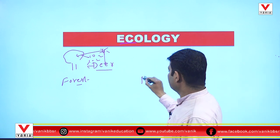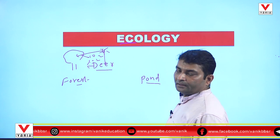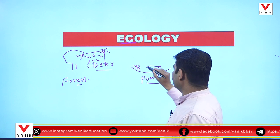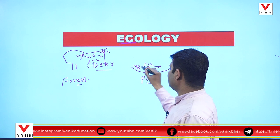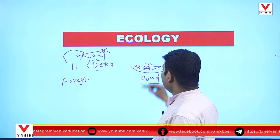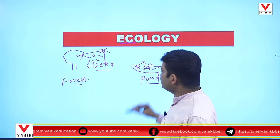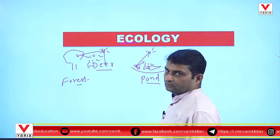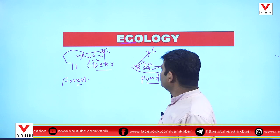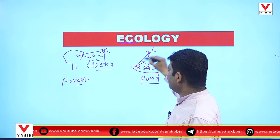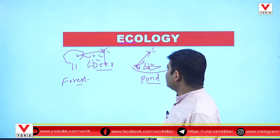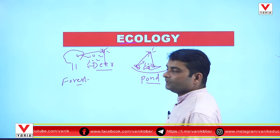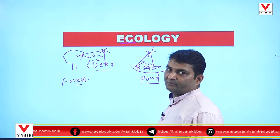Now consider a Pond. Here an aquatic plant is there and also an aquatic animal like fish. In respiration, the fish releases carbon dioxide, which is utilized by the plant in the process of photosynthesis, and the plant releases oxygen utilized by the animal. Sunray falls on the plant, which uses sunlight in the process of photosynthesis. This sunlight is also used by the animal for making vitamin D.